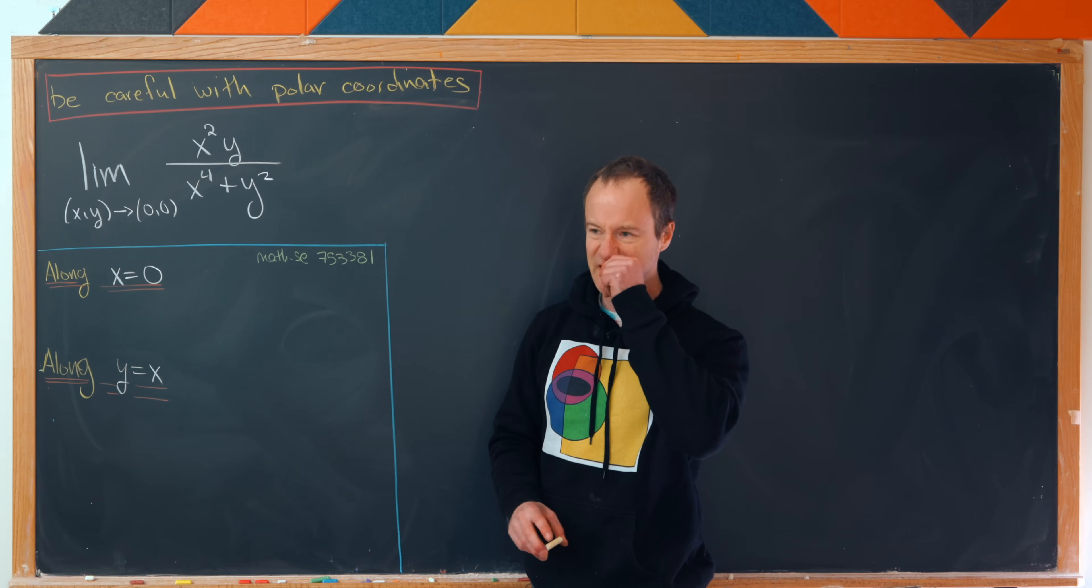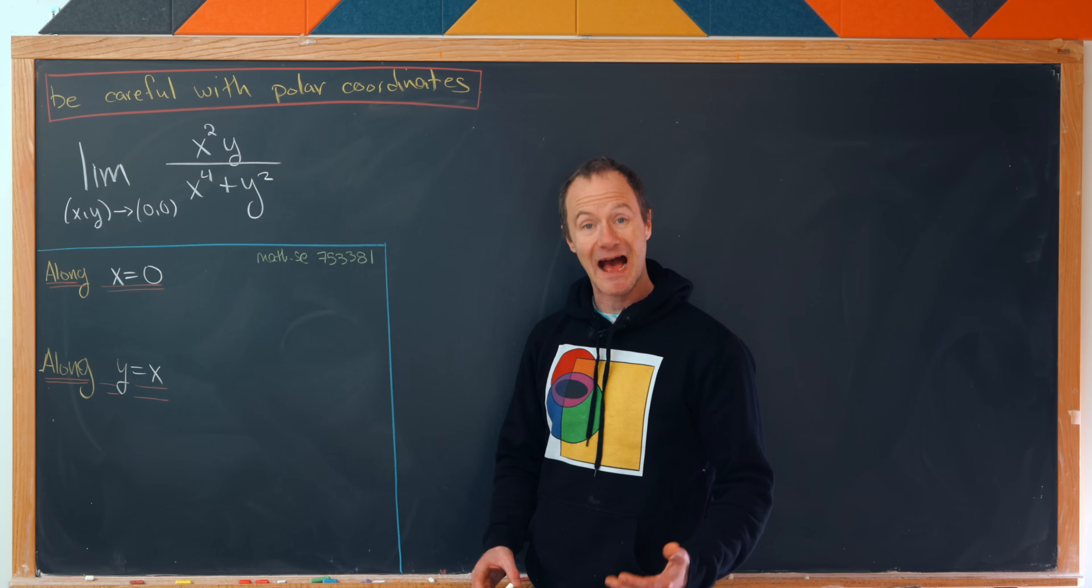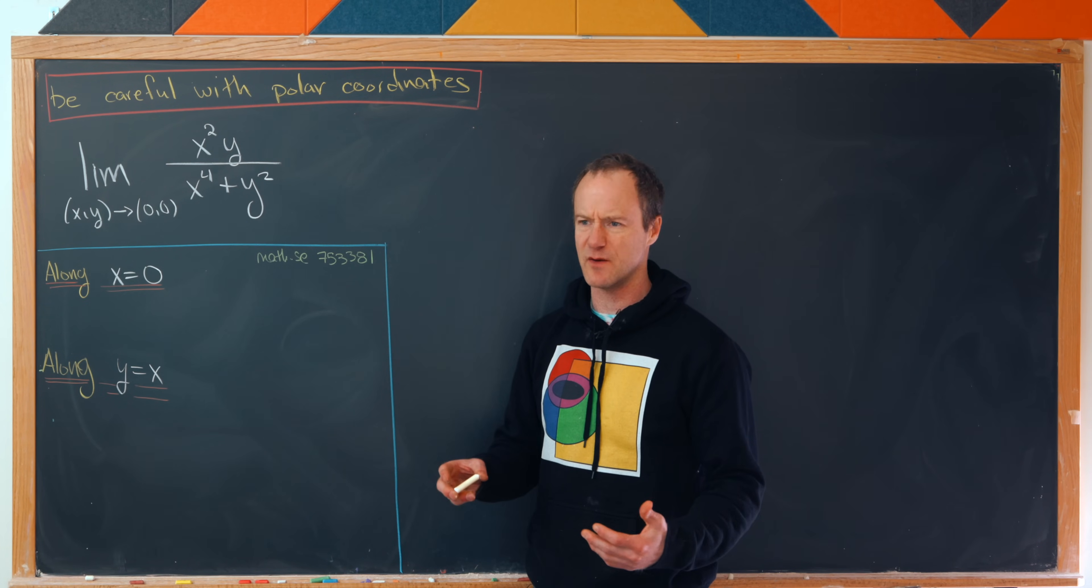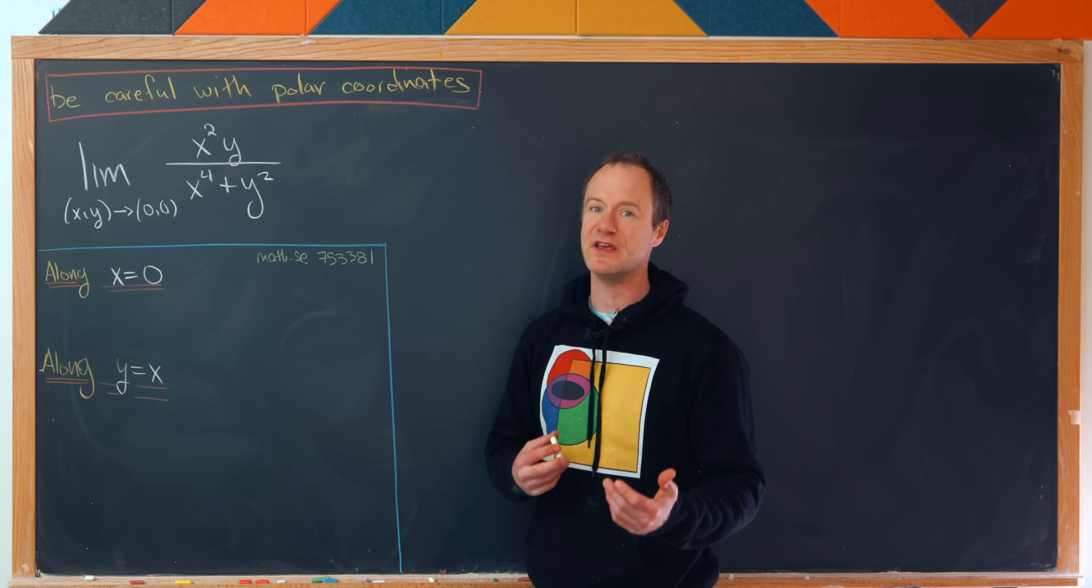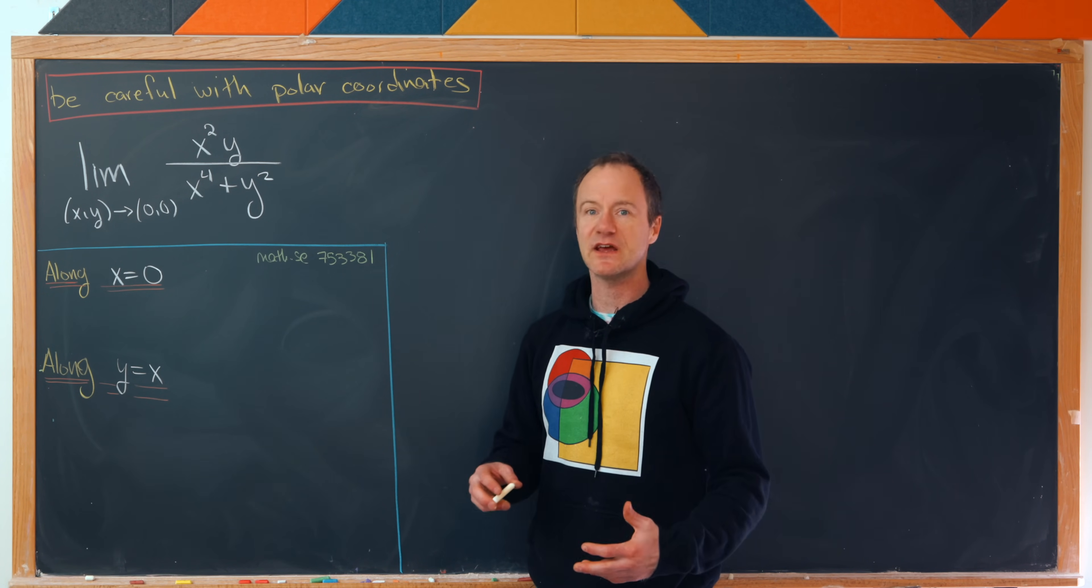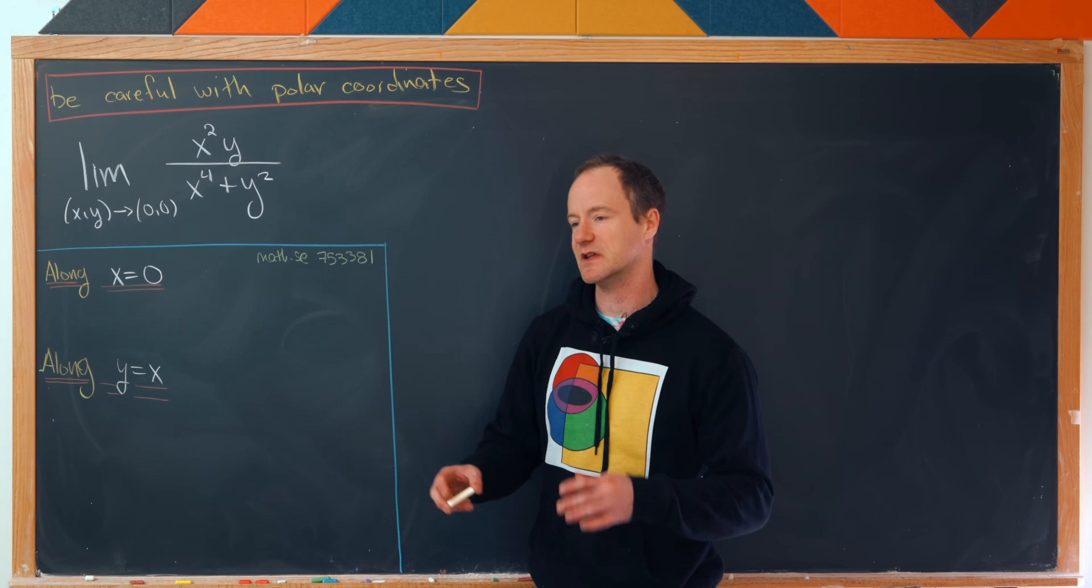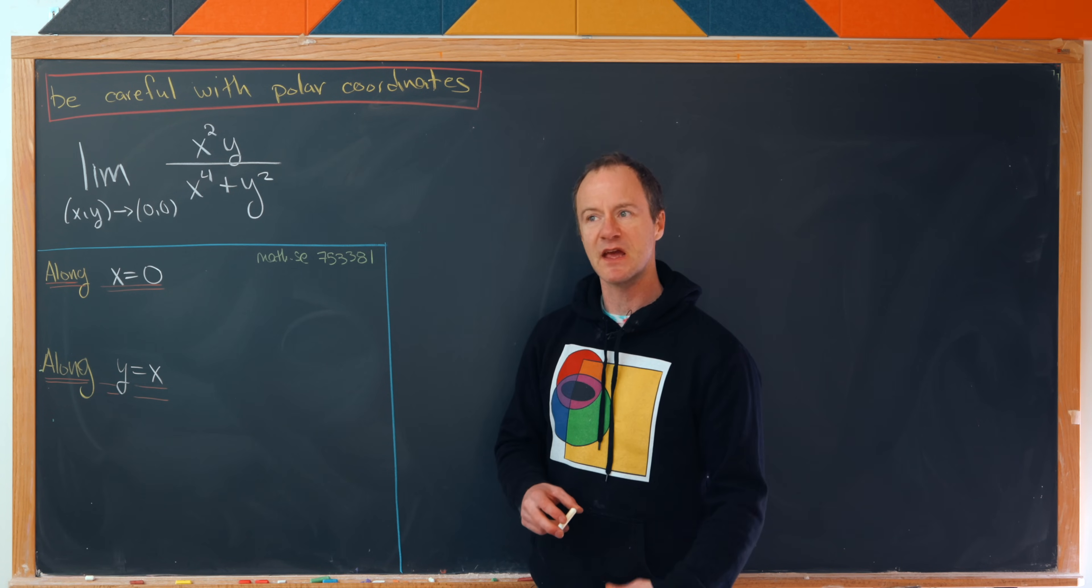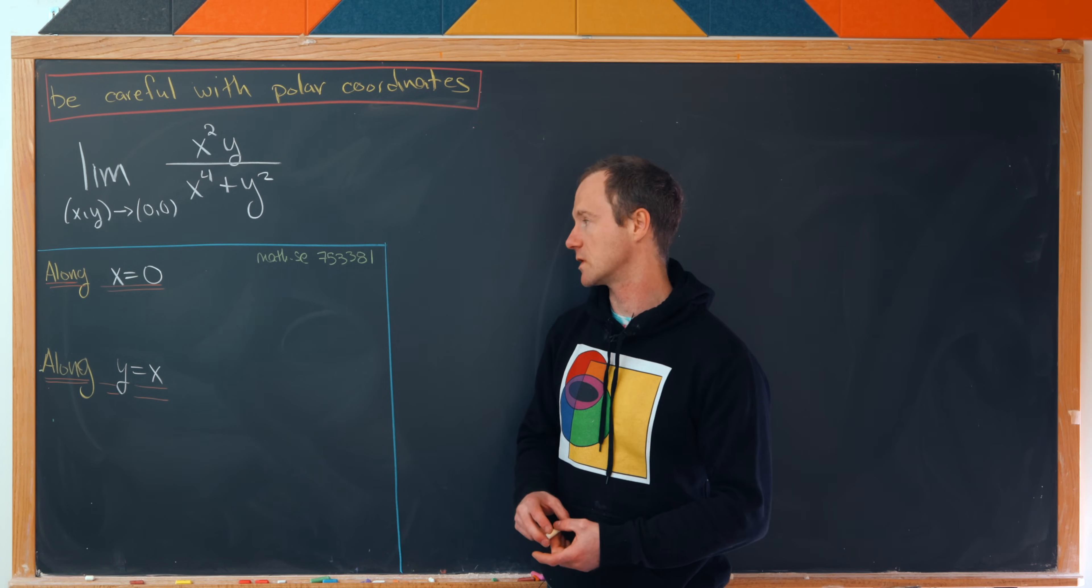So the classic thing to do is to check the value of this limit as we approach the origin on a couple of very simple curves and then see that we get different values for the limit, or perhaps we'll be gathering data that the limit might exist. And then if we get enough data to show that the limit might exist, then we need to find the value of this limit using some tricks. And sometimes this trick is in fact passing to polar coordinates.